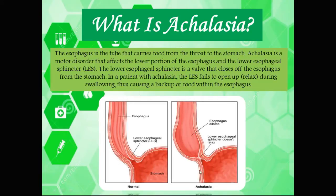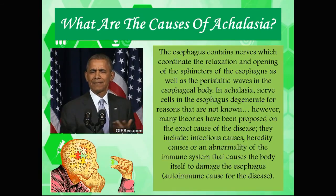Here you can see the normal anatomy alongside what patients with achalasia experience — that failure of the lower esophageal sphincter to relax, leaving it very tightly shut. Because of the long-standing accumulation of food, saliva, water, and liquids in the esophagus, it is going to dilate. That normal thin tube-like structure of the esophagus becomes a larger tube, and this is what happens in patients with achalasia.